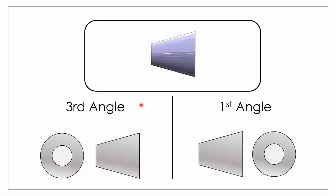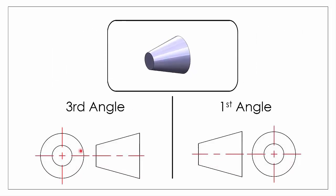All we have left to do then is just put in our center lines on our object to give us our symbol for third angle and our symbol for first angle.